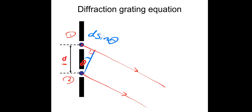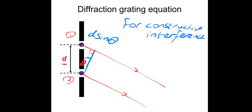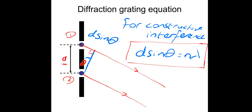So that's the extra path difference travelled by beam one. For constructive interference, the path difference D sin theta must be equal to a whole integer number of wavelengths. That is where the equation comes from: D sin theta equals n lambda. D is the distance between two individual lines, theta is the angle, n is the order (one, two, three etc.), and lambda is the wavelength of light.